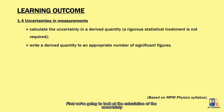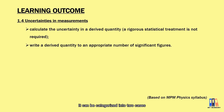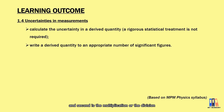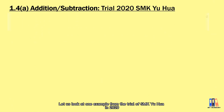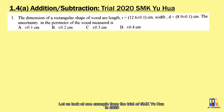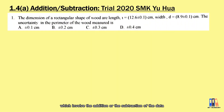First we're going to look at the calculation of the uncertainty. It can be categorized into two cases: first is the addition or the subtraction, and second is the multiplication or the division. Let us look at one example from the trial of SMK UR in 2020, which involved the addition or the subtraction of the data.